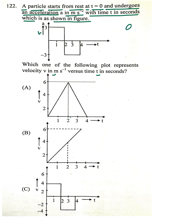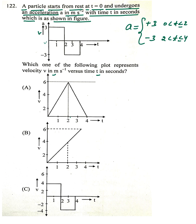What about a? The acceleration values are plus 3 and minus 3, when t goes from 0 to 2 seconds and 2 seconds to 4 seconds respectively.